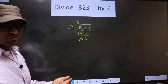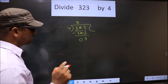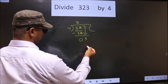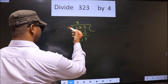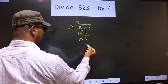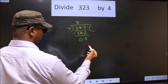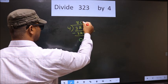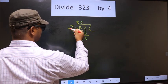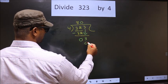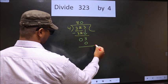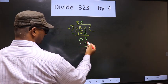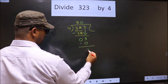Instead, what you should think of is: what number should we write here in the quotient? If we write 4 here, that will be larger than 3. So what we do is we take 0 here. So 4 into 0 is 0. Now you subtract — 3 minus 0 is 3.